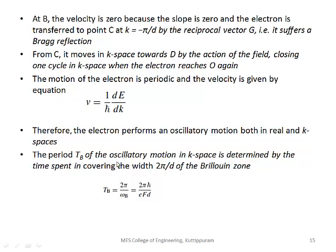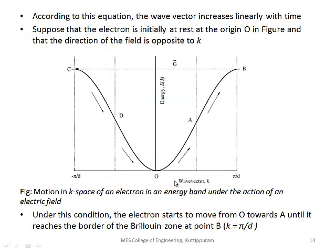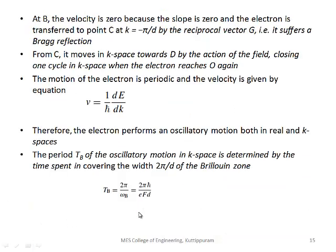This is periodic motion with a group velocity v = (1/ℏ)dE/dk. The period of the oscillatory motion is TB = 2π/ω = 2πℏ/eFd.